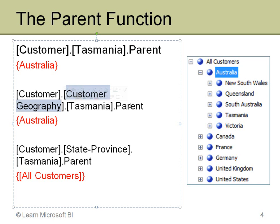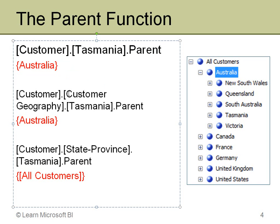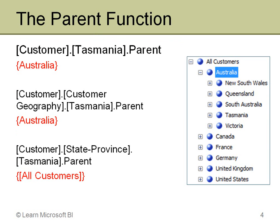When you specify something like Tasmania without a qualifier, it searches and apparently finds it first in the multi-level hierarchy. You should always explicitly specify what you want and where you want values to come from. At the bottom, I specify the state-province attribute hierarchy specifically — its parent there is simply all customers, because that's a flat hierarchy with only an all level and then all the state provinces regardless of country.